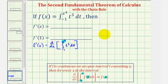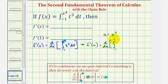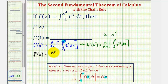If we let u equal x to the fourth, then we could say that f prime of u, not f prime of x, would be equal to the derivative with respect to u of the integral from negative one to u, not x to the fourth, of f of t. So now we can use the theorem to find f prime of u. Remember our goal is to find f prime of x, which means we'll have to apply the chain rule. f prime of x would be equal to f prime of u times u prime, or df du times du dx.